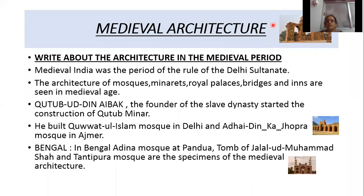Medieval India was the period of the rule of the Delhi Sultanate. The architecture of mosques, funerary structures, royal palaces, and bridges are seen in the medieval age. Qutbuddin Aibak, the founder of the Slave dynasty, constructed Qutub Minar, Quwwat-ul-Islam Mosque in Delhi, and Adhai Din ka Jhonpra Mosque in Ajmer. In Bengal, the Adina Mosque at Pandua, the tomb of Jalaluddin Muhammad Shah, and Tantipura Mosque are specimens of medieval architecture.